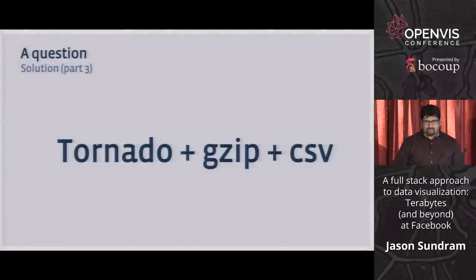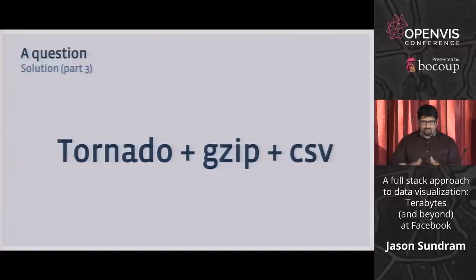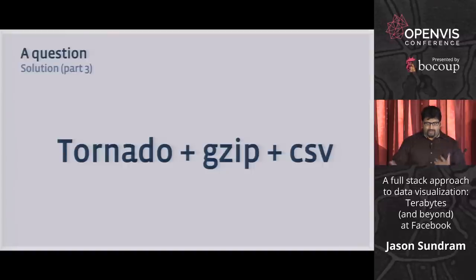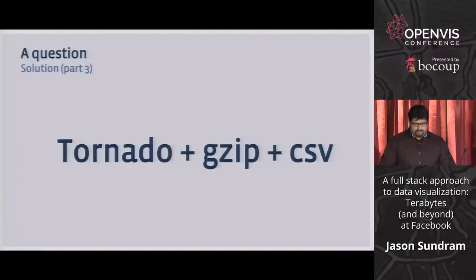We've got all this data and now we need to make it smaller and push it to a web browser. You need to make some kind of API for that. I use Tornado because I love Python, and Python speaks Thrift, which means it can talk to pretty much any other system at Facebook — whether written in Java, C, or even PHP.